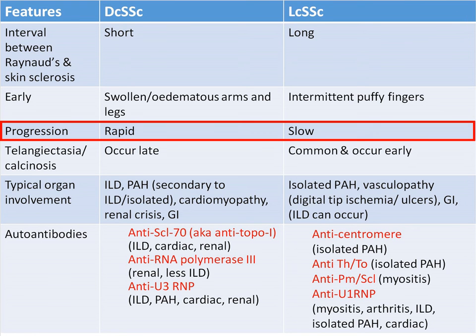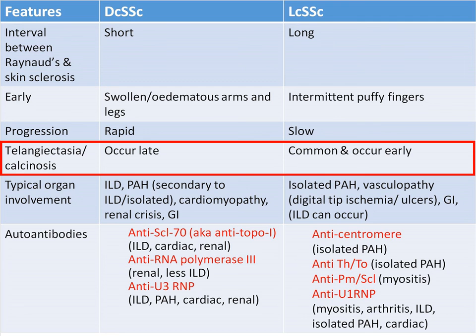The tempo of progression is different. In patients with diffuse cutaneous systemic sclerosis, 80% of organ involvement occurs in the first three years of disease onset. For example, a patient reporting Raynaud's phenomenon onset one year ago with skin involvement distal to the elbows and knees starting only six months ago could still be evolving to the diffuse subtype and requires close monitoring. Conversely, a patient with an eight-year history of Raynaud's phenomenon and sclerodactyly is likely to be of the limited subtype. Telangiectasia and calcinosis are common and occur early in those with limited cutaneous systemic sclerosis.